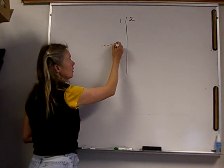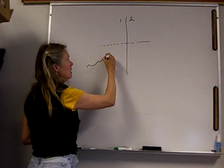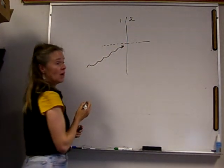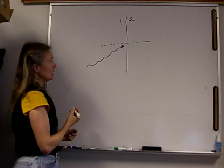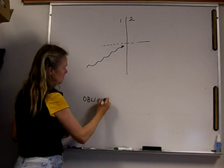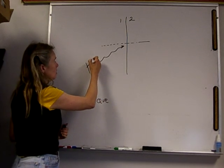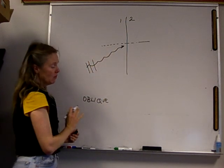This is the normal to that boundary, the perpendicular to the boundary. And here's a plane wave that's coming in in a direction that is not perpendicular to the boundary. We call this oblique incidence just because it is not perpendicular.